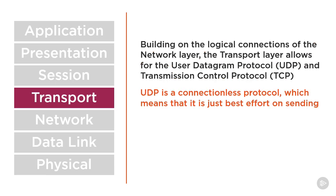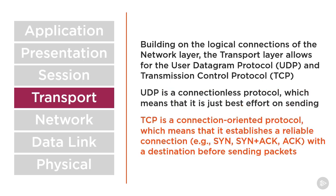UDP is a connectionless protocol, which means that there is no guarantee that the data sent will ultimately make it to its destination. TCP, on the other hand, is a connection-oriented protocol, which means that it will provide more certainty that the data will ultimately make it to its intended destination.